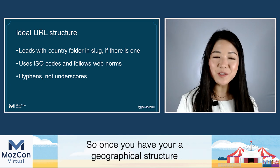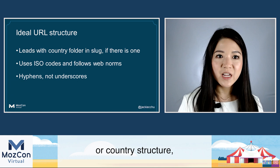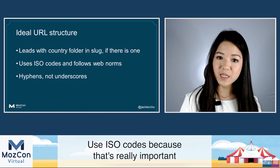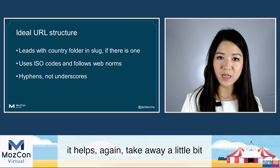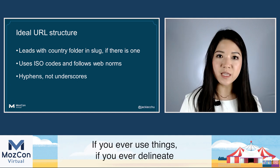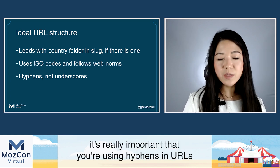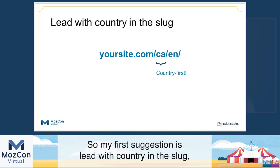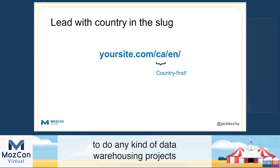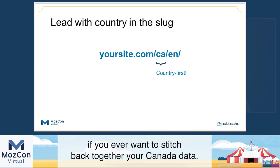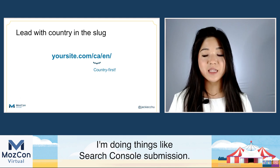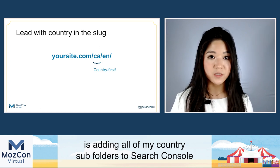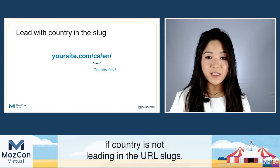Next, let's talk about URL structure. Once you have your geographical structure, my favorite thing to do is lead with the country folder in the slug. Use ISO codes — it helps follow web norms and takes away guesswork for Google. If you use a hyphen between your country and language, make sure you're using hyphens in your URLs and not underscores. Leading with country in the slug makes it a lot easier to do data warehousing, analytics, and Search Console submissions — for instance, adding all your country subfolders to Search Console and targeting them in GSC will be much harder if country is not leading in your URL slug.